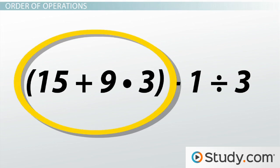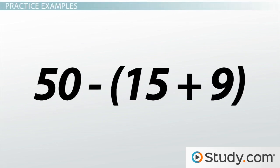Also, remember to take the order of operations one step at a time. Let's put these parentheses rules to practice with a couple of examples. 50 minus the quantity of 15 plus 9.